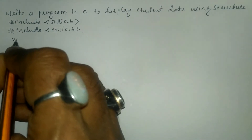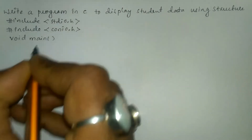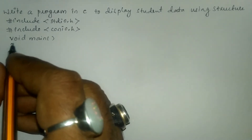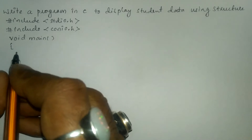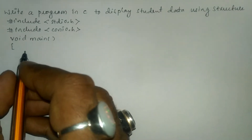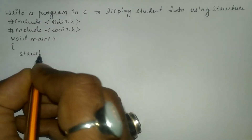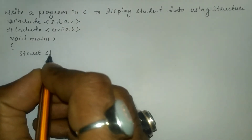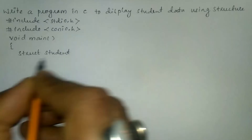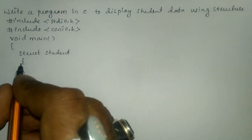Now we are going to write the void main function, curly open brace, and here inside the void main function I'm going to define a structure with the keyword struct. Then I'm going to write the name of the structure as student, curly open brace indicates the beginning of the body of a structure definition.